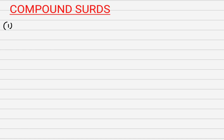Example: what if I'm asked to rationalize (1 plus root 2) all over (root 2 plus root 3)? How do I do this? This is called a compound surd because it comprises the addition of 2 or more surds. To rationalize this, we multiply both the numerator and the denominator by the conjugate of the denominator. We need to know what the conjugate means.